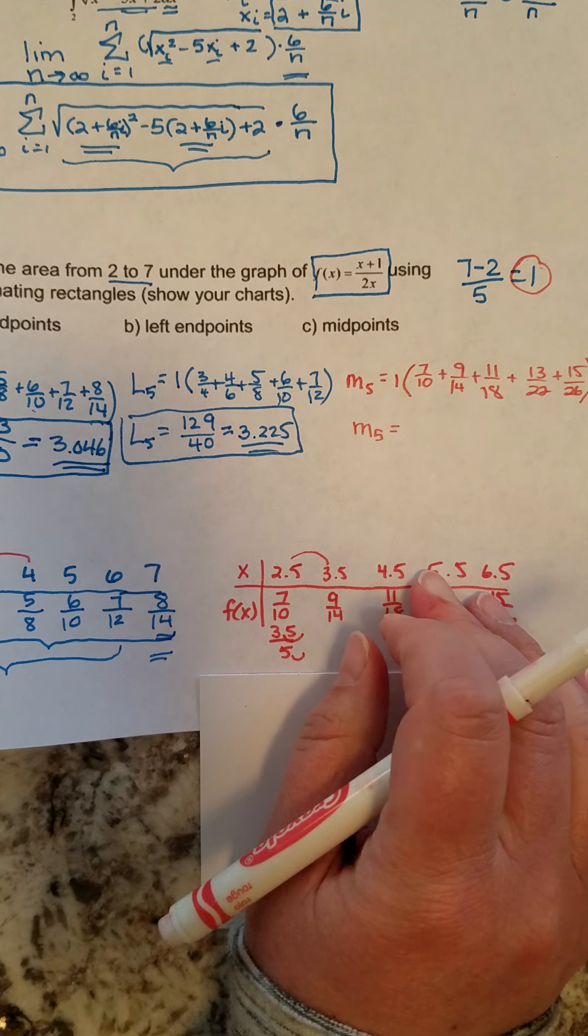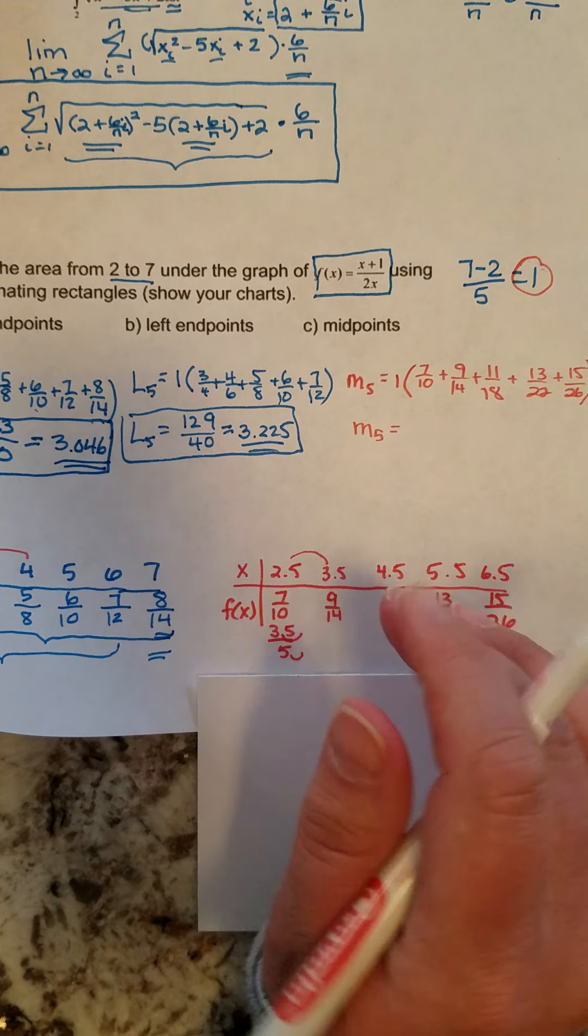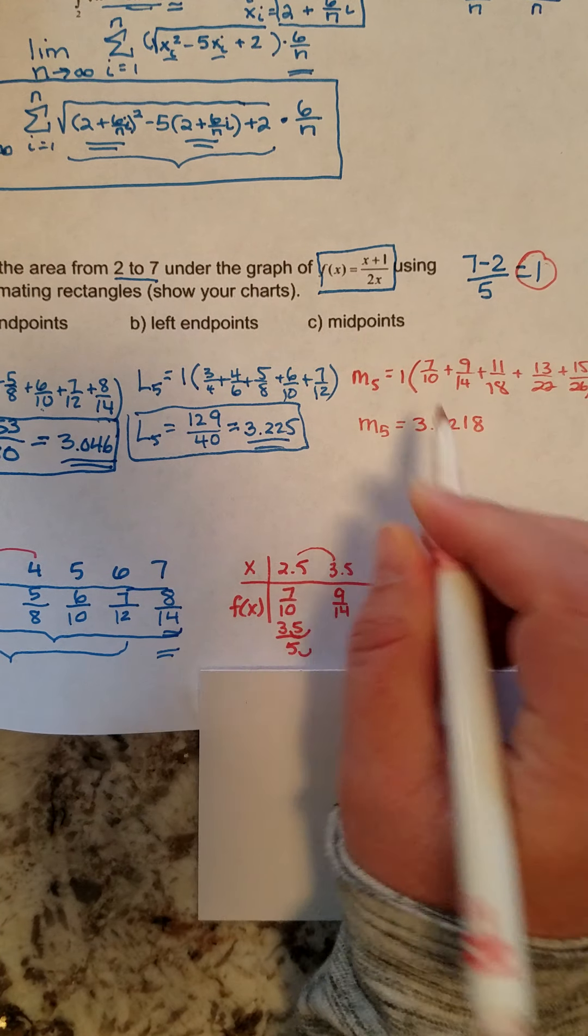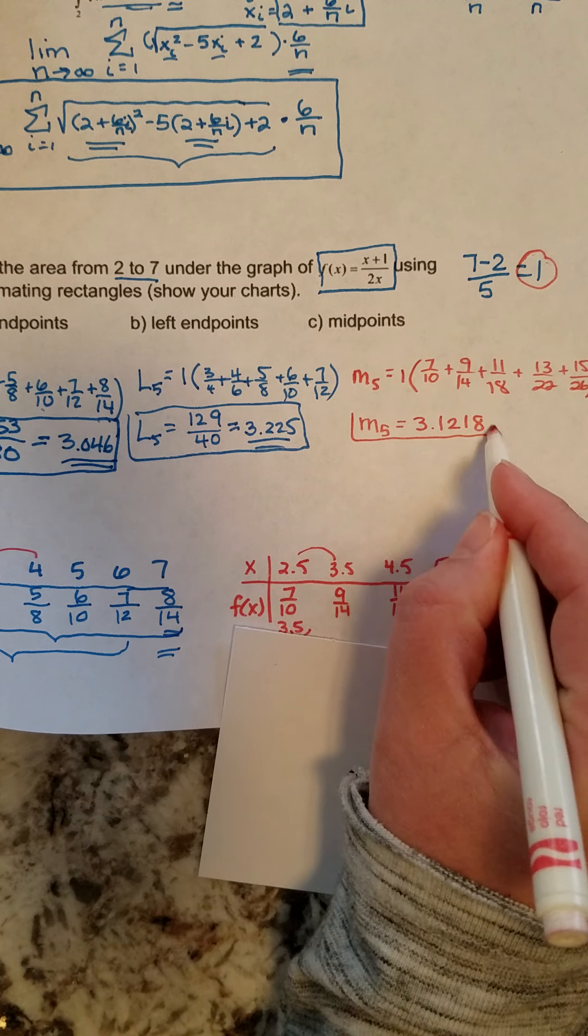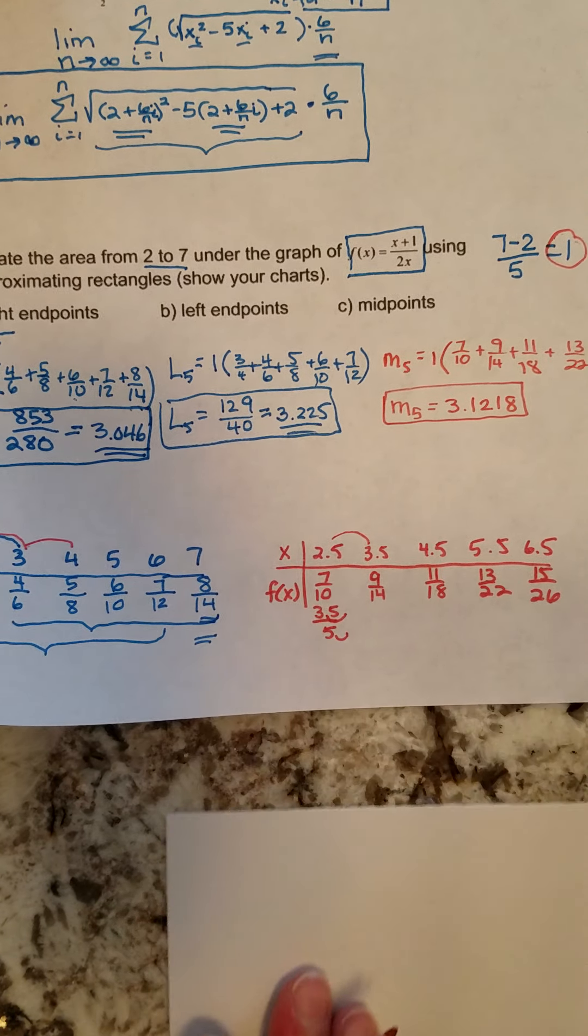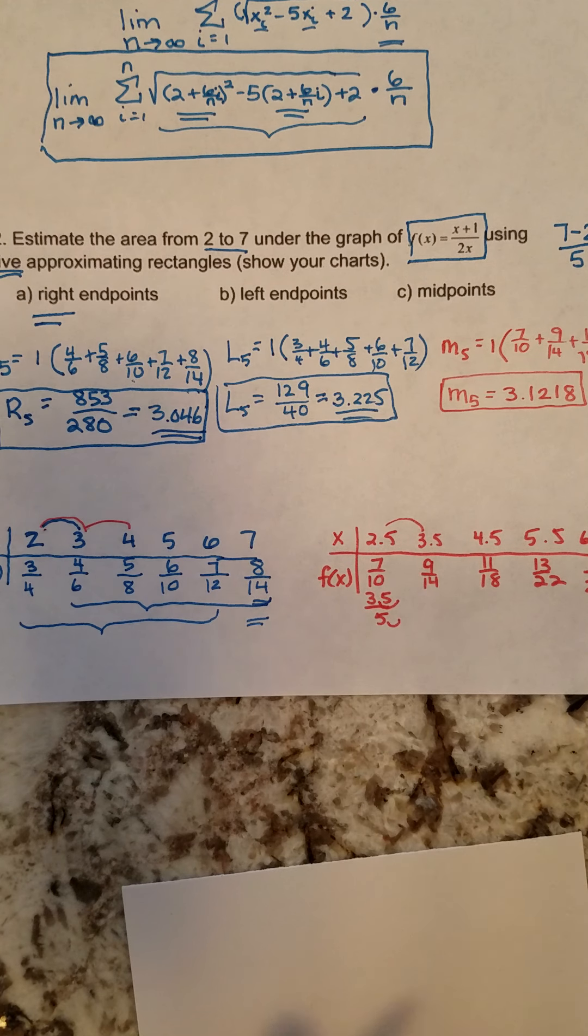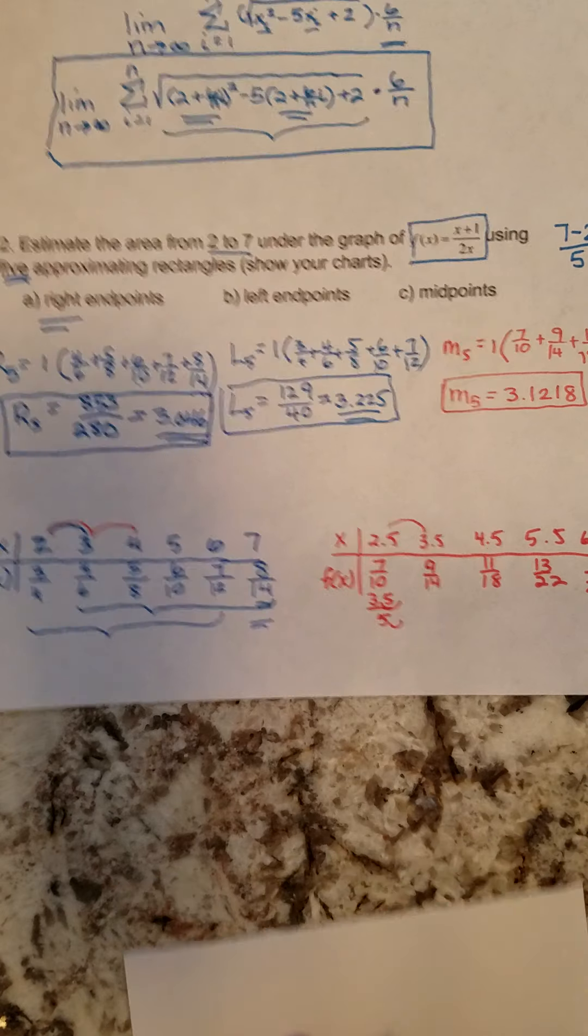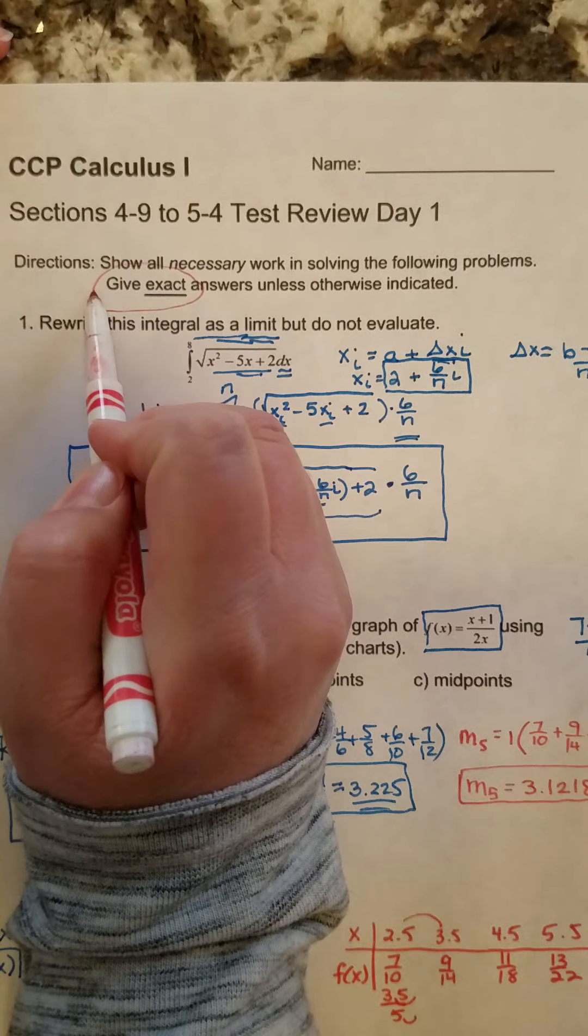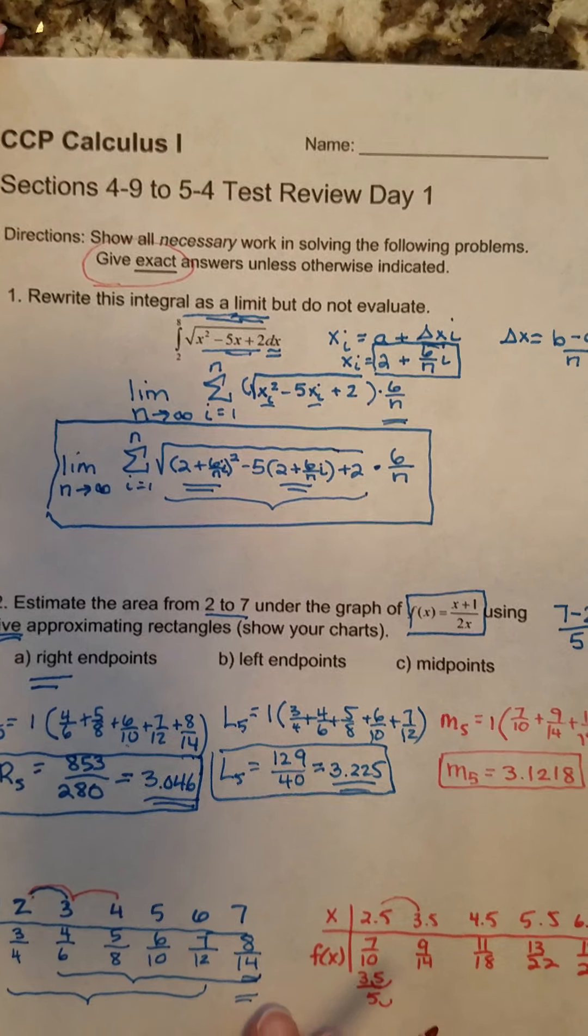When you do, you end up getting, I just have the decimal this time, 3.1218, something right around there. Even if you gave me 3.12 or 3.122, I would accept any of those answers since the problem does not say how to leave it. Though, I will remind you up here at the top, it says give exact answers unless otherwise indicated.